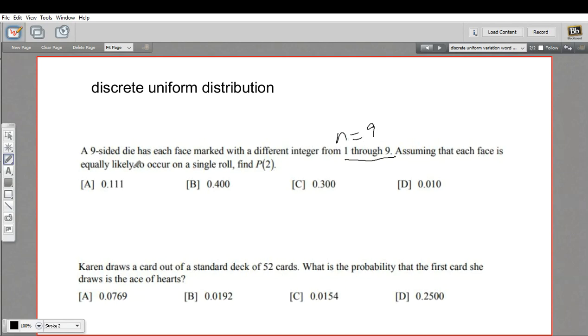Then it says, assuming that each face is equally likely to occur on a single roll, so that's definitely uniform distribution, find the probability of getting a 2. Well, the probability of getting any number is the same. It's 1 over the total number of chances, so 1 over 9.